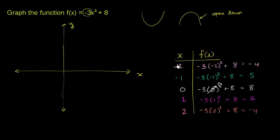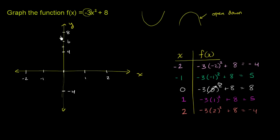Now let's plot these. The x values go from negative 2 to positive 2, so I'll mark negative 2, negative 1, 0, positive 1, and positive 2 on the x-axis. The f of x values range from negative 4 to positive 8, so on the y-axis I'll mark positive 8, positive 6, positive 4, positive 2, and negative 4, with intermediate values like 1, 3, 5, and 7 also indicated.